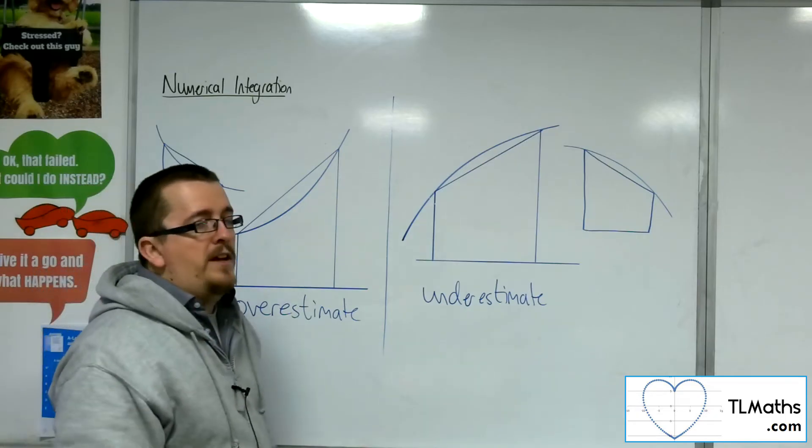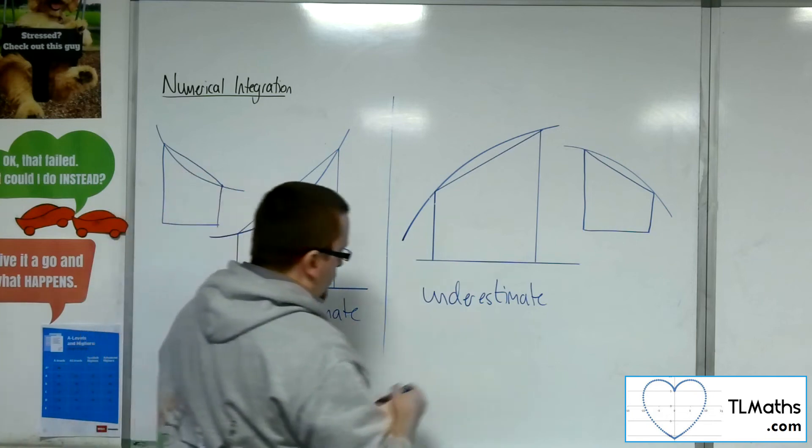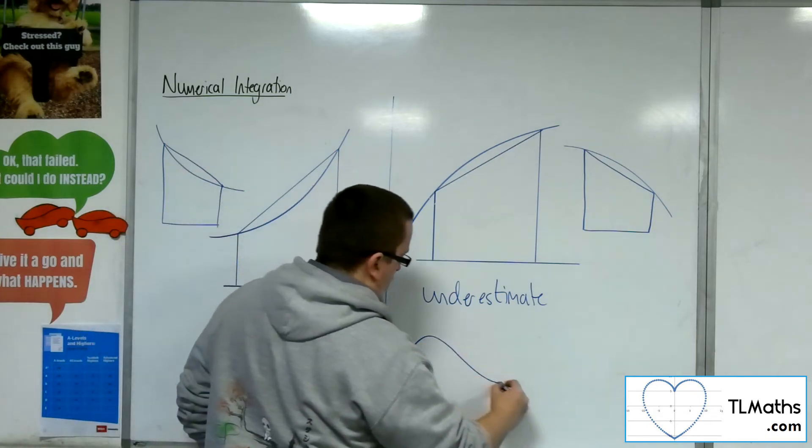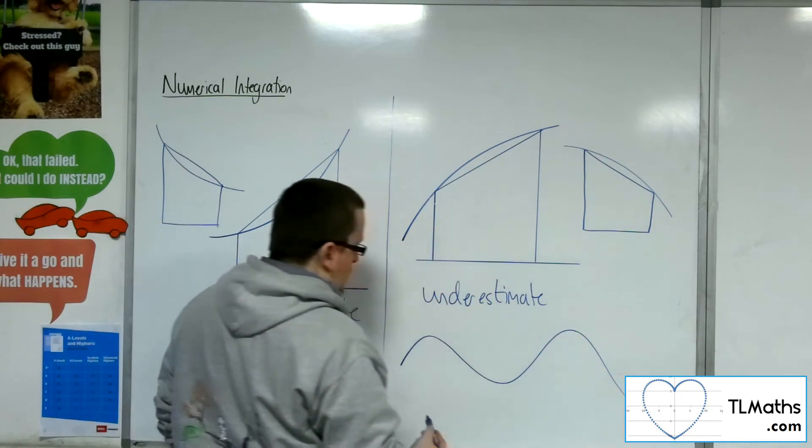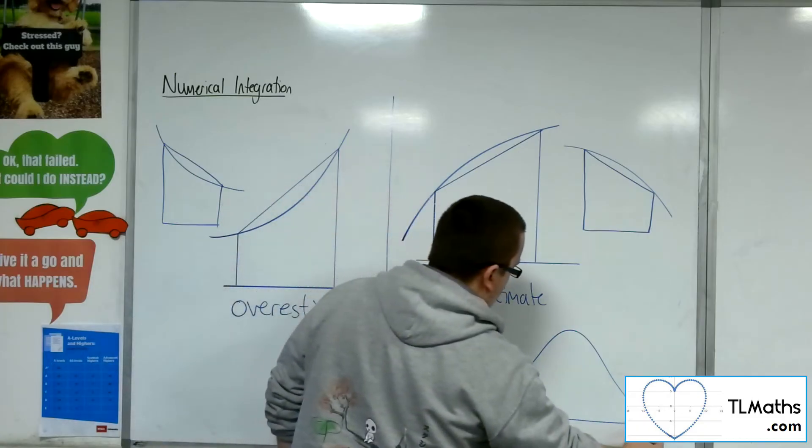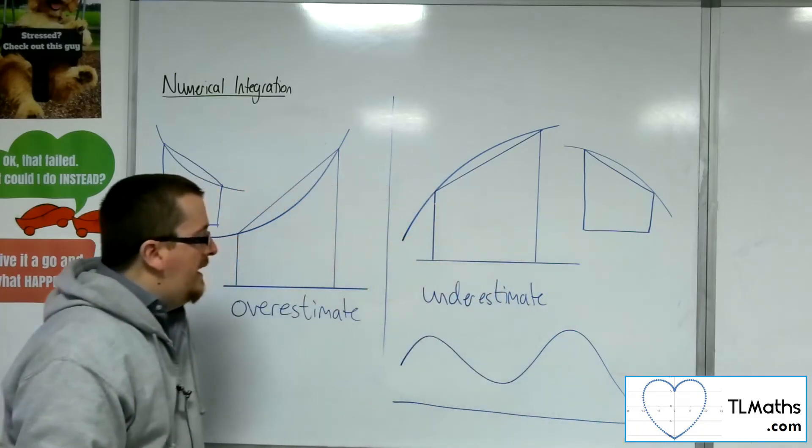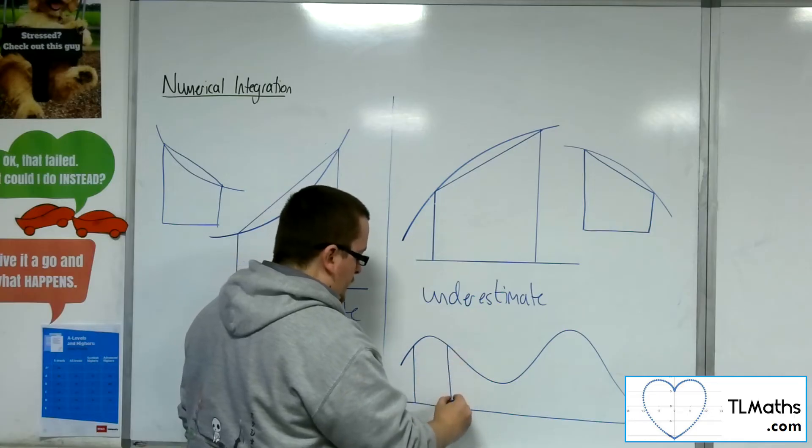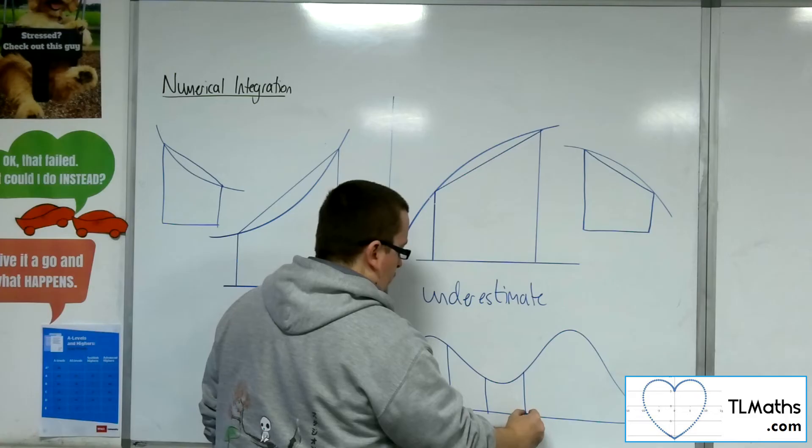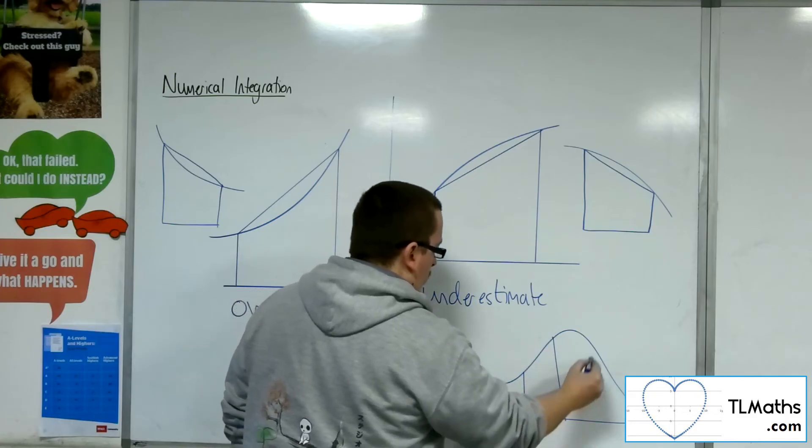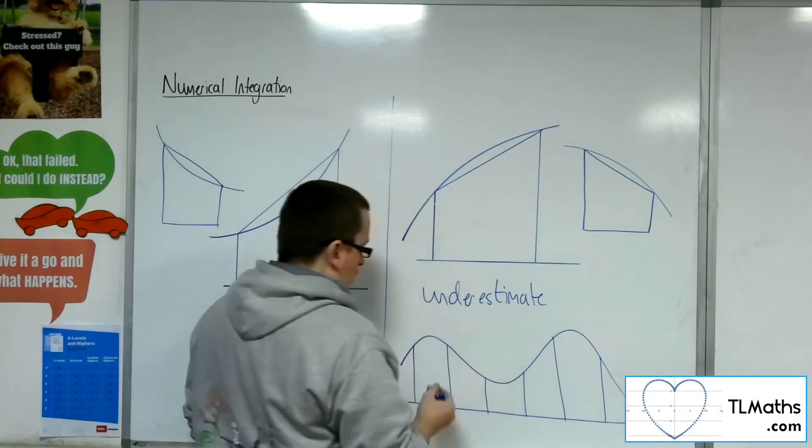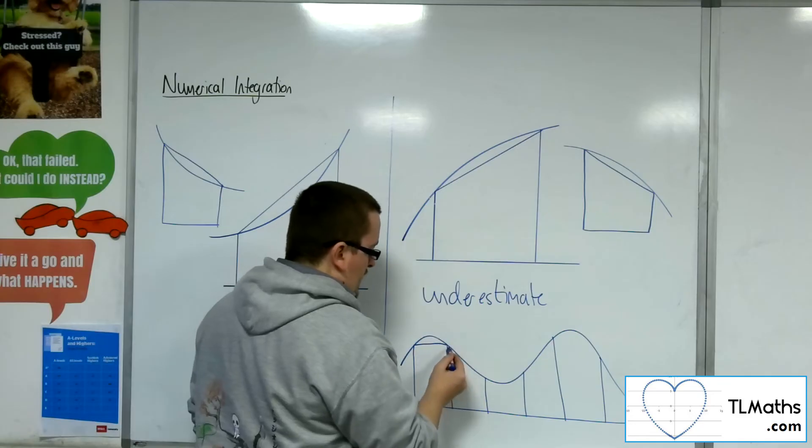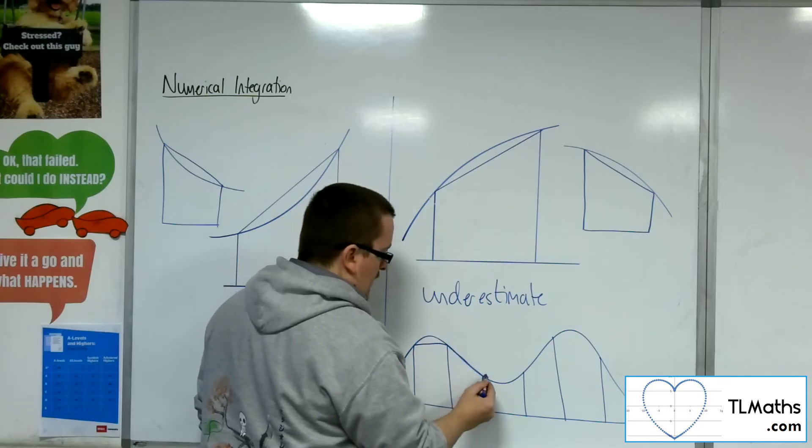If the shape of the curve between the two points you're considering has a change in being convex and concave, then it is a little bit more challenging to figure out whether what you've got here is an overestimate or an underestimate in total.